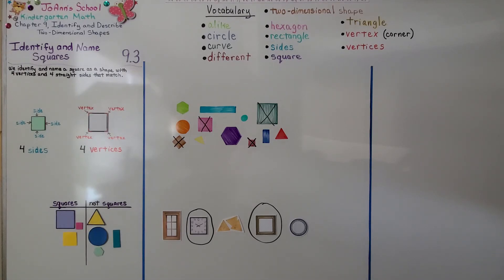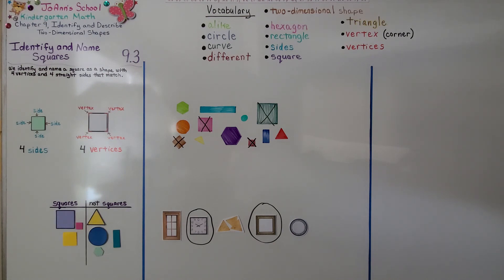So remember, squares have four straight sides that match and four corners, four vertices. In our next lesson, 9.4, we're going to describe squares. I hope you'll join me. Have a wonderful day, and please hit the like button. Bye.